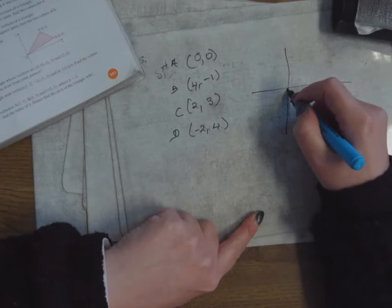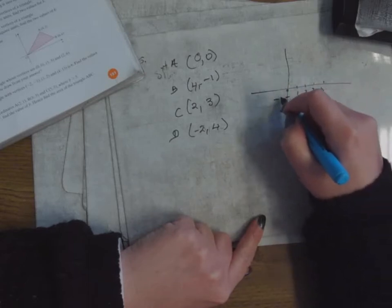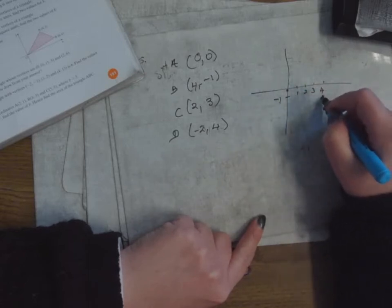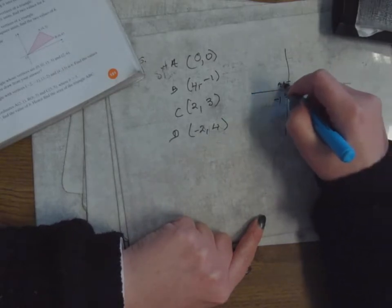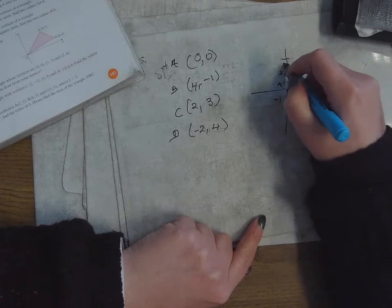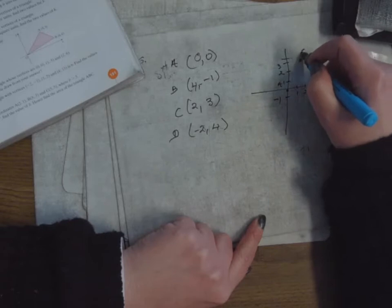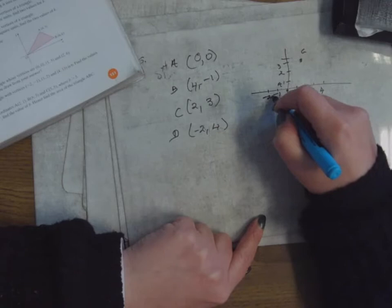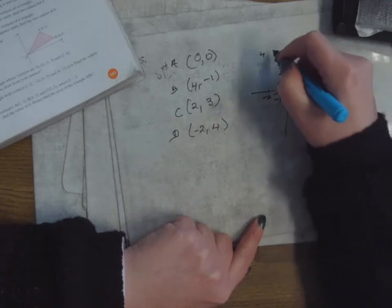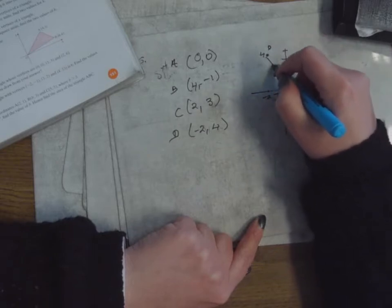So I'm putting in the numbers as I draw it. That's A. B is across four and you can see it — very quick sketch. That's B. Across two, up three — that's C. And D is minus two, four — across minus two and up to four — so minus two four is up here somewhere. That's the quadrilateral.